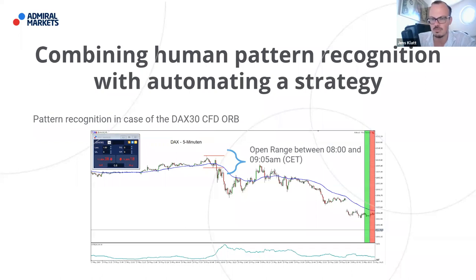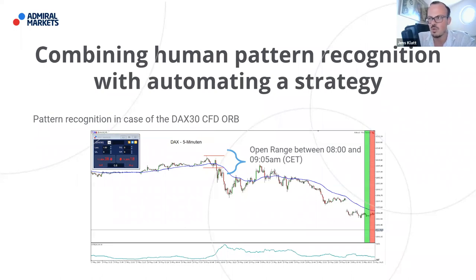In the case of the DAX, the recognized pattern is an open range — the high and the low identified between 8:00 and 9:05 a.m. Central European Time. Why 9:05 and why 8 a.m.? Before December 2018, the futures DAX opened at 8 a.m. German time every day, and at 9 a.m. the spot market Xetra opens. Xetra opening means the spot market comes to life with lots of volume pouring in. So I try to filter out the noise and wait for the first five minutes to take place, then formulate my trading range based on the open range.